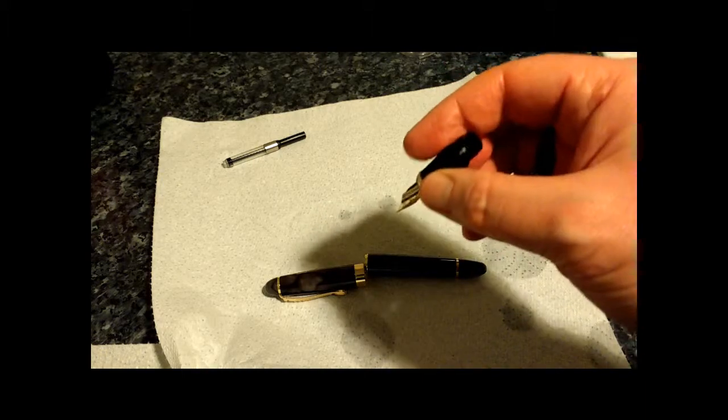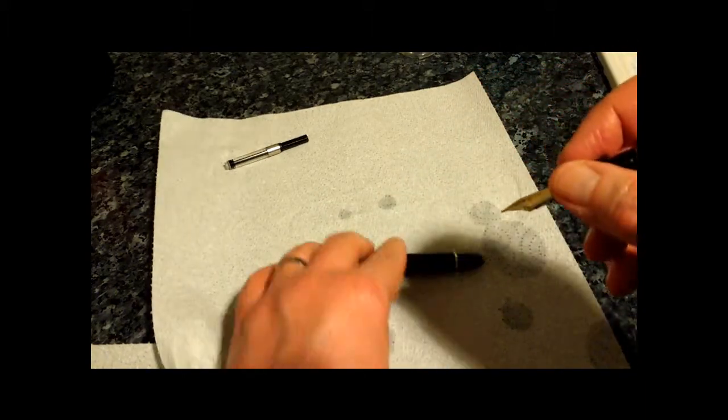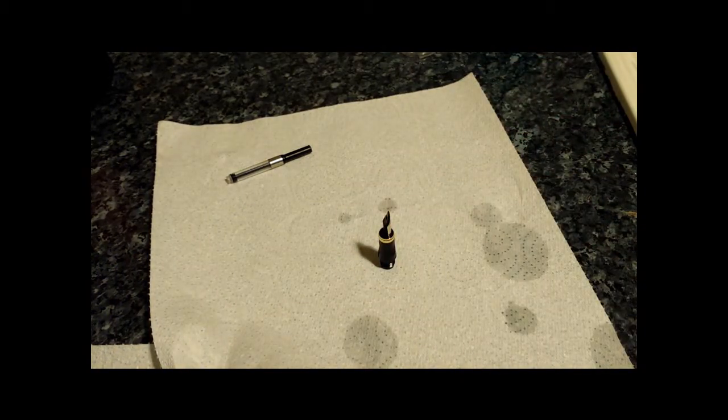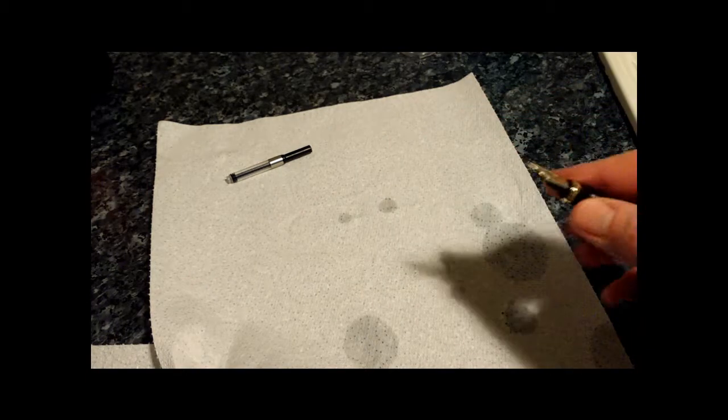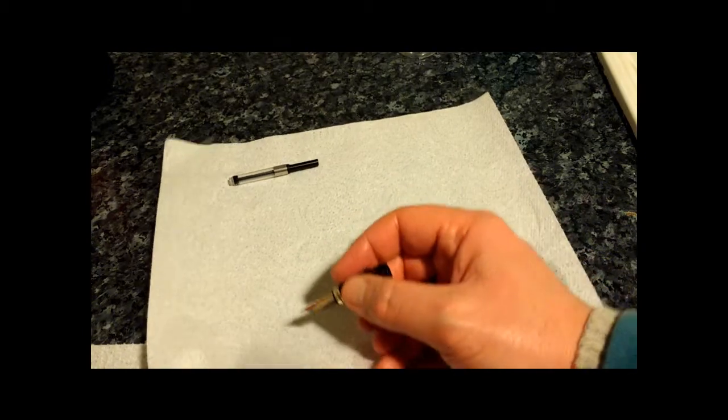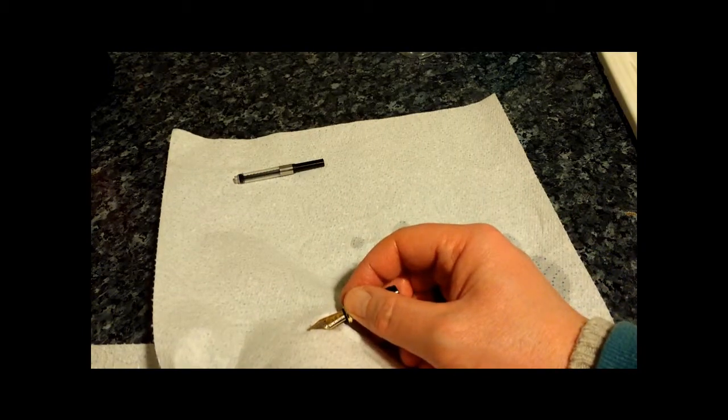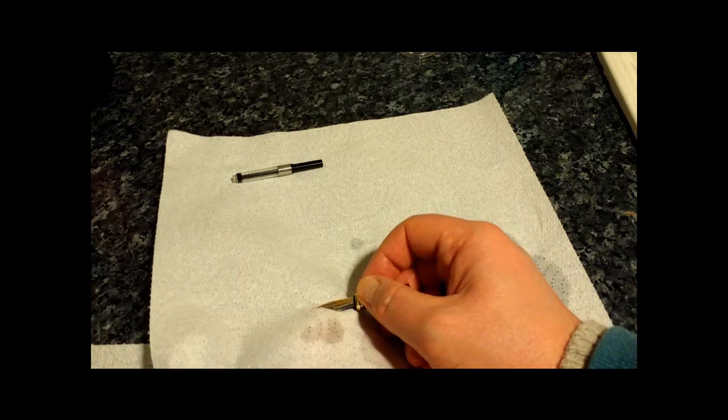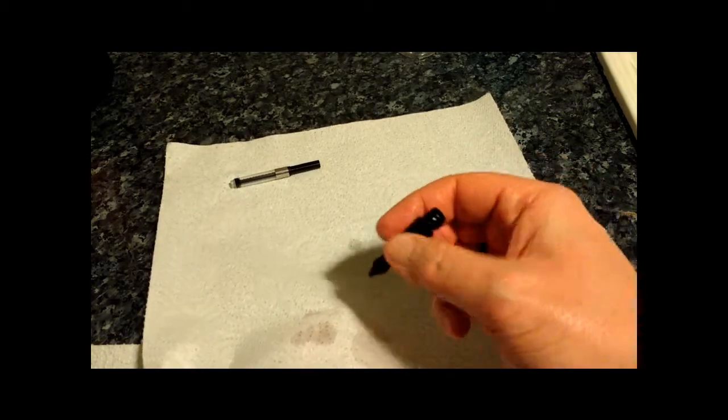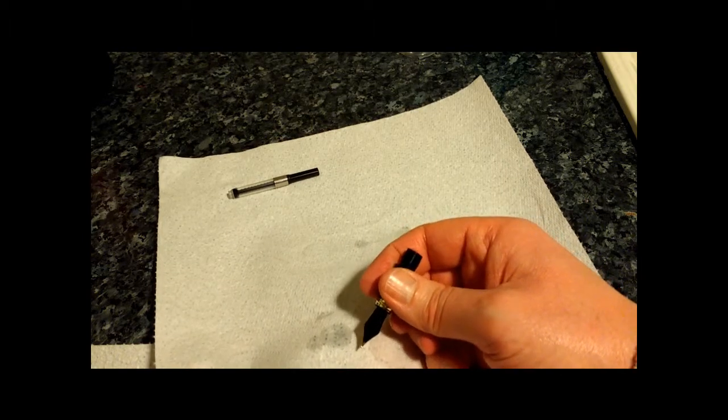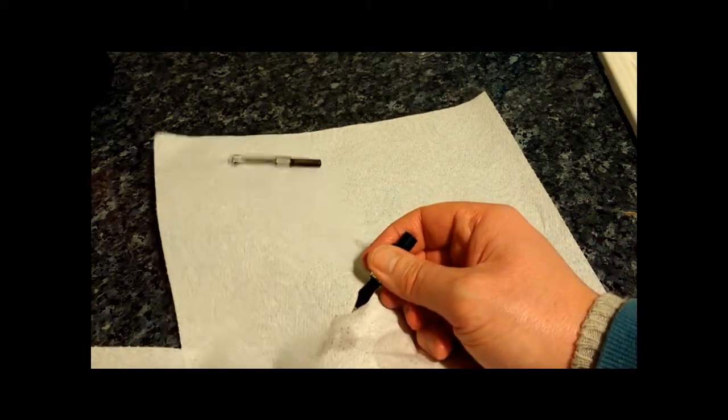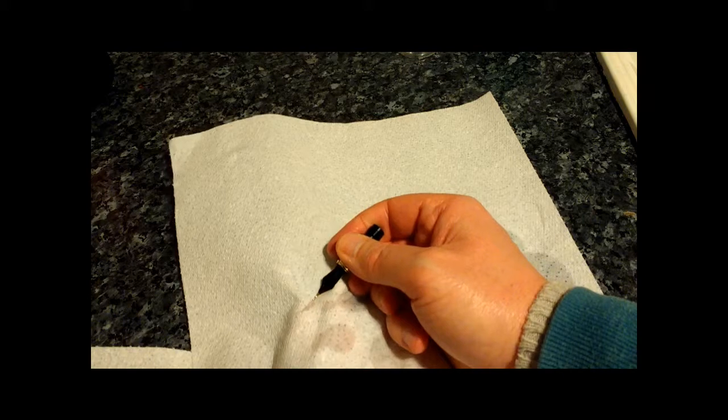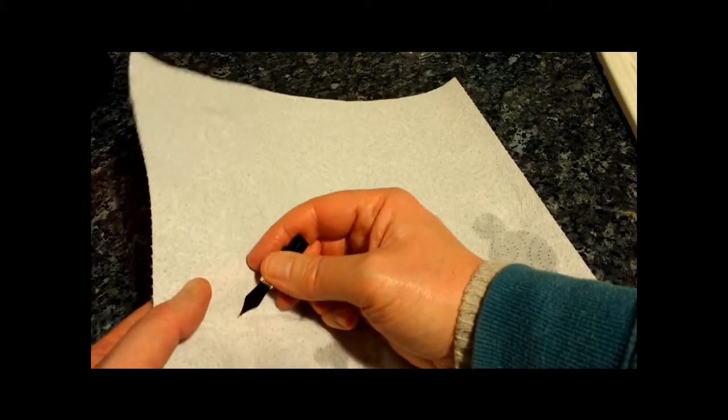Now the feed and the section and the nib will be holding fair amounts of water in there. You can't get it out. I mean you could leave it sort of stood like this for several hours overnight, something like that, then it will dry out. But, you know, practicality, modern day living. I just hold the feed gently on the paper. And it's sucking the water into the paper. And I turn it over then, so I've got basically writing with the pen, sort of with my fingers upside down. And you can see how much water is coming out of this. Just dabbing it onto the paper.